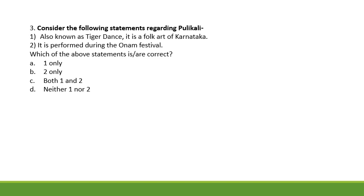Pulikkali is from Kerala. It is a form of tiger dance where performers wear masks and make-up. The second statement is correct — it is performed during the Onam festival, specifically on the fourth day. Performers wear tiger masks and body paint, and dance in rhythm using instruments like Thakil, Uduku, and Chenada. So the correct option is statement 2 only.